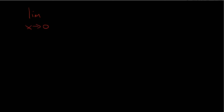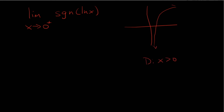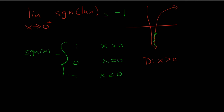Next we'll be looking at natural log — we'll have the sign of natural log of x. Here it really makes sense to approach it from the right, because the domain is defined to be x greater than 0. If I'm looking at approaching from the right of 0, that is clearly negative. So sign of this negative value is going to be negative 1. Since it's negative, we're going to get negative 1 as our answer.